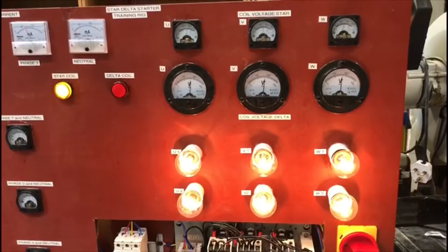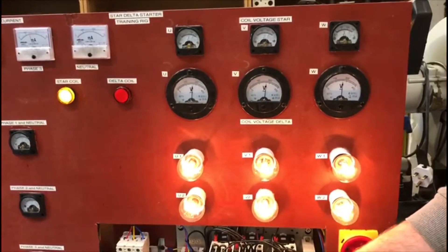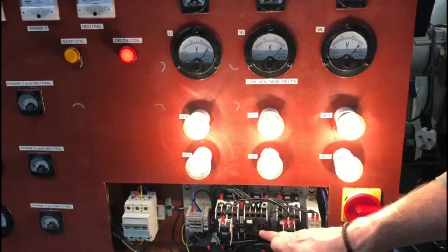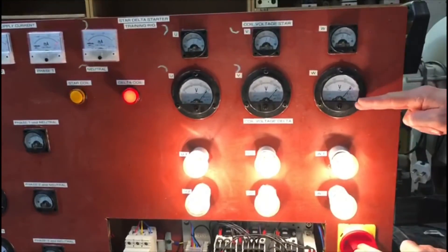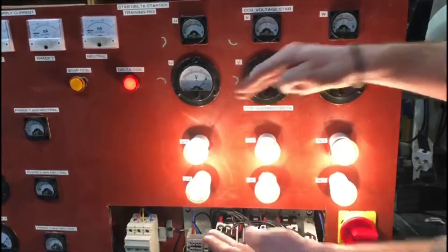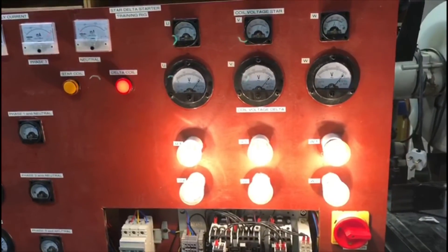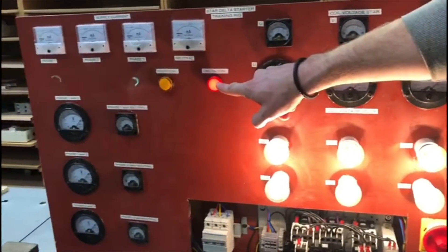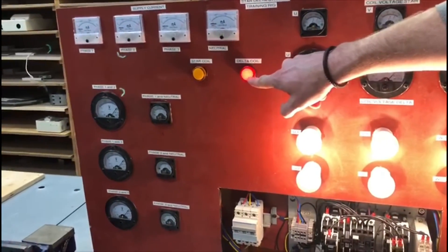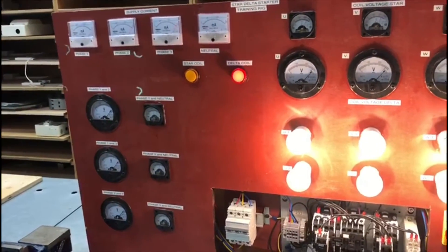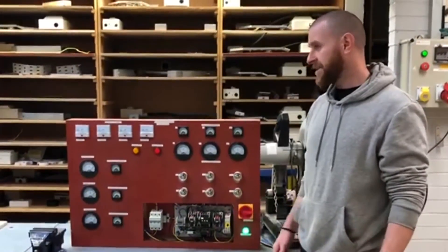This will change over. This contact will pull out and this contact will pull in, and you can see that pulling in there. And now, 400 volts is appearing across both of these pairs of lamps, and you can see they're working much brighter. And also, I don't know if you saw that, we've now got the delta lights lit up. And before, the star one was lit up.